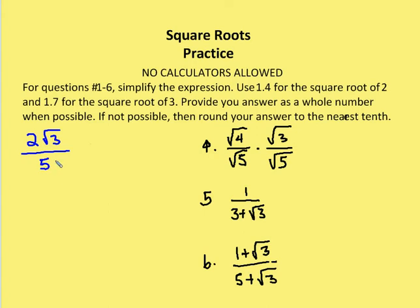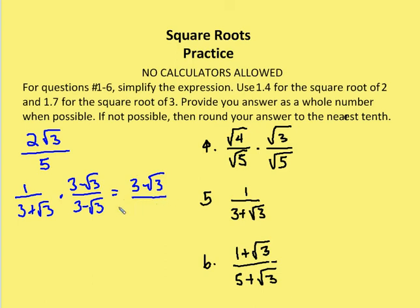The next problem has a radical in the denominator, so I'm going to use the conjugate to find the solution. I have 1 over (3 plus root 3), multiplied by the conjugate (3 minus root 3) over (3 minus root 3). I get 3 minus root 3 on top. On the bottom I have a squared minus b squared: 9 minus (root 3 squared), which is 9 minus 3, equal to 6. So the answer is (3 minus root 3) over 6. I can't simplify further because I need a factor of 6 to reduce the numerator.